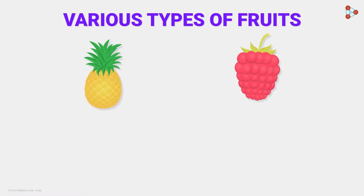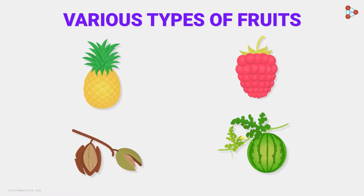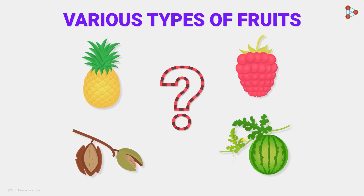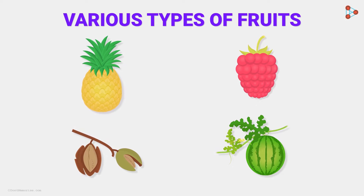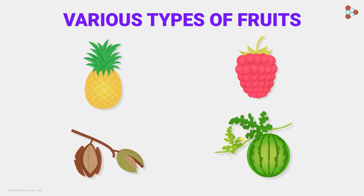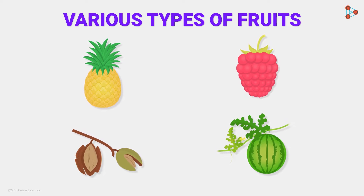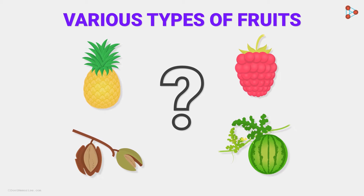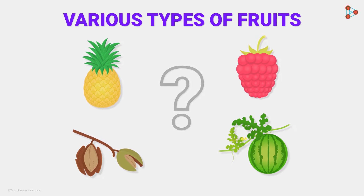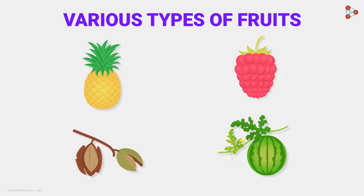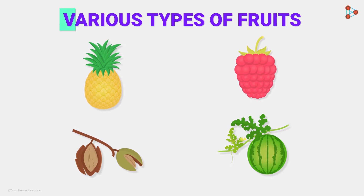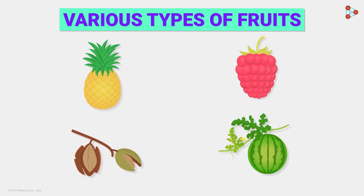Now, do all fruits have this kind of structure? Do they all look similar? No — fruits like pineapple, berries, almonds, and melons all look completely different. So don't these have the layers we just discussed? Of course they do! Yet these fruits are different from each other, which means fruits come in various types.